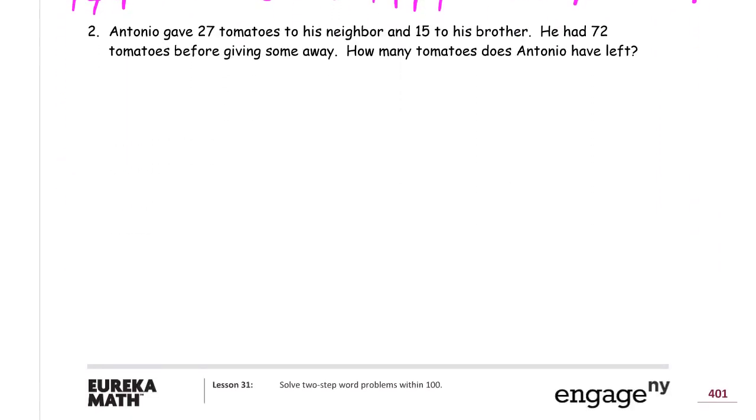Now Antonio gave 27 tomatoes to his neighbor and 15 to his brother. He had 72 tomatoes before he gave those away. How many tomatoes does he have left? So he had 72. This is the before tomatoes, right? 72. That's all his tomatoes.